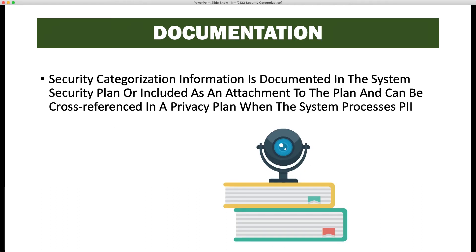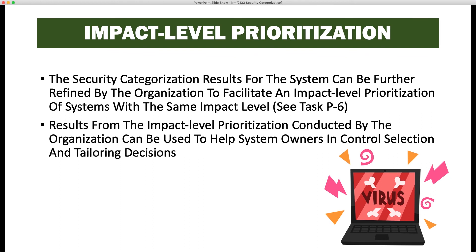Security categorization information is documented in the system security plan or included as an attachment to the plan, and can be cross-referenced in a privacy plan when the system processes PII. The system security plan is a living document — we can go back and update it with the categorization of the information and the system overall.